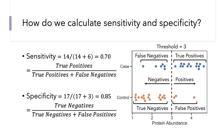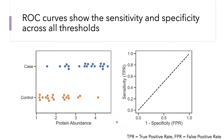ROC curves show the sensitivity and specificity across all of the thresholds we could select in our dataset. The x-axis plots one minus the specificity, which we also call the false positive rate, and the y-axis plots the sensitivity, which we can also call the true positive rate. I'm going to refer to the x-axis as the false positive rate for the rest of this discussion.